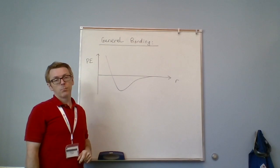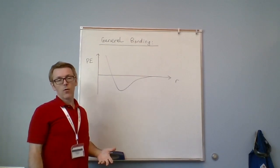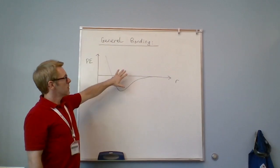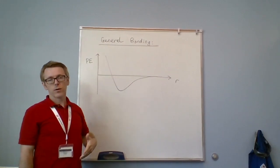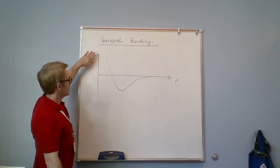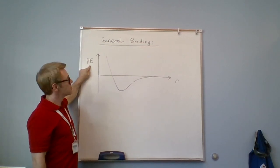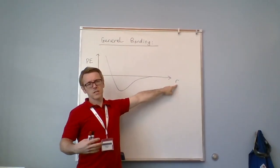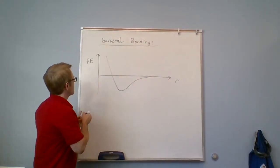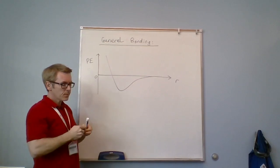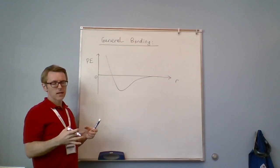In this video we're going to look at bonding in general, whether it be covalent or ionic bonding. This video will extend upon a previous idea of potential wells. On the y-axis here we have potential energy, on the x-axis we have r which is distance, and this point will be zero.